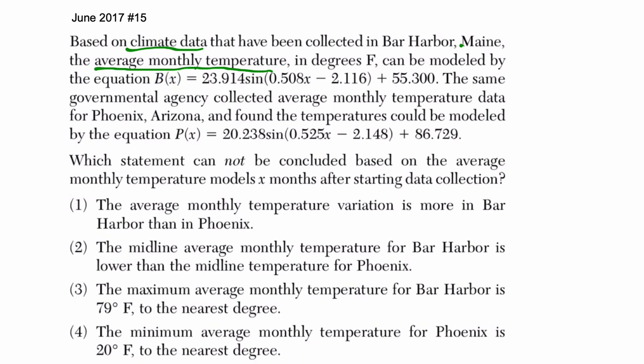So we have B(x) is for Bar Harbor. I'll use blue for that one. Bar Harbor has this equation that models the average monthly temperature. And for Phoenix, we have P(x) for Phoenix, and I'll write that in red.